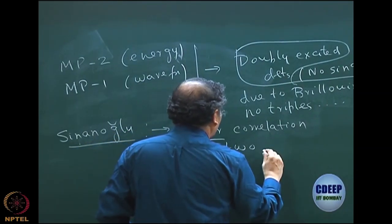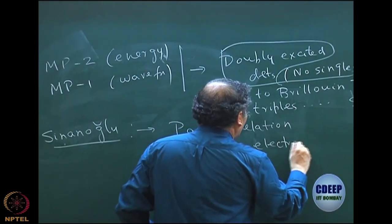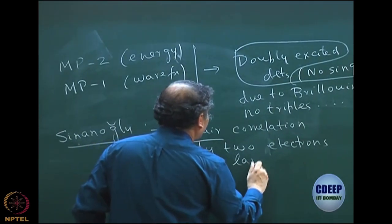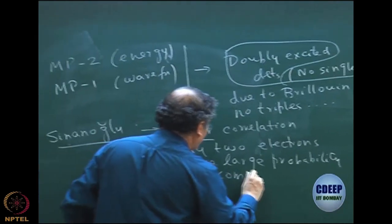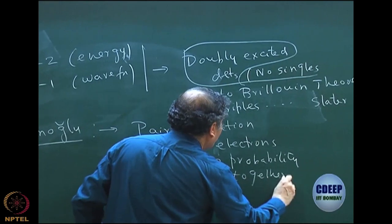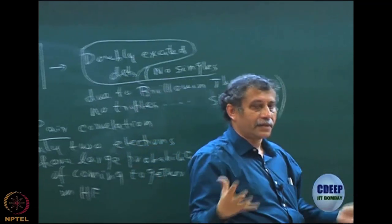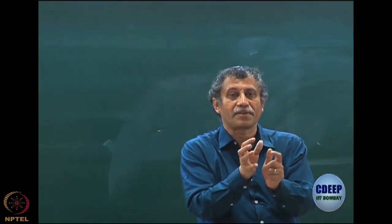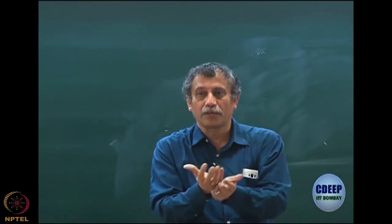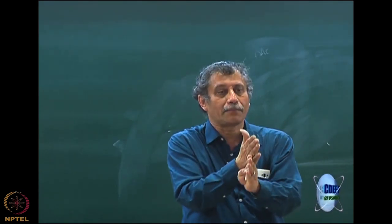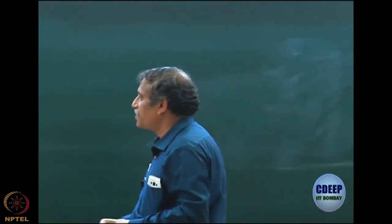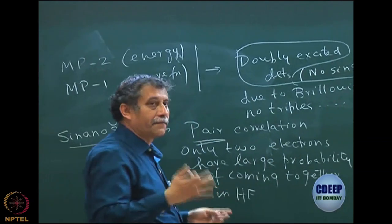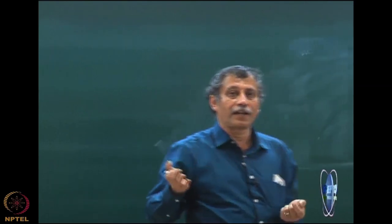Sinanoglu's argument was that only two particles can come close together. Why? Because in Hartree-Fock, only two electrons have a large probability of coming together. This is a hand-waving argument: Hartree-Fock is a single determinant, so it already has anti-symmetry built in. It has the Pauli exclusion principle built in, which means no three electrons can be in the same spatial orbital. A spatial orbital can have at most two electrons, and because two electrons are in the same spatial orbital there is a probability they can come together — so those two electrons must be correlated by exciting them to the virtual orbitals.